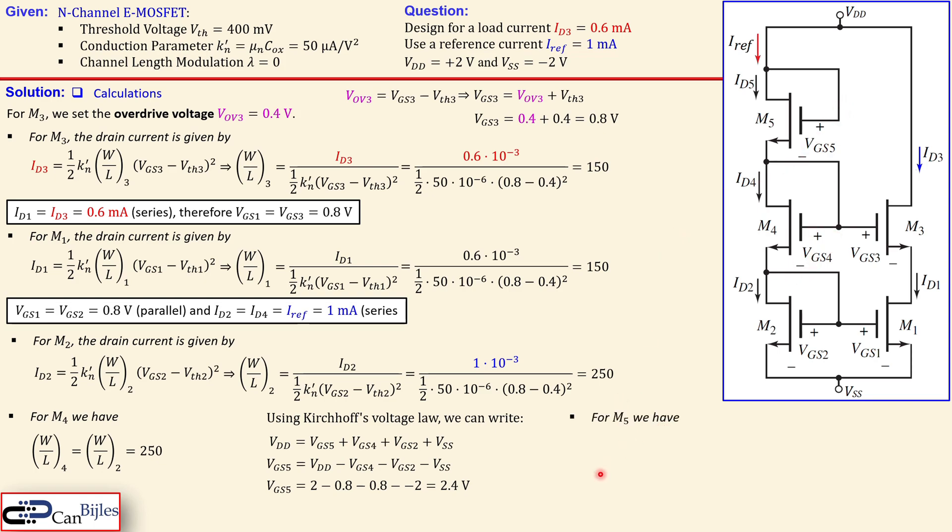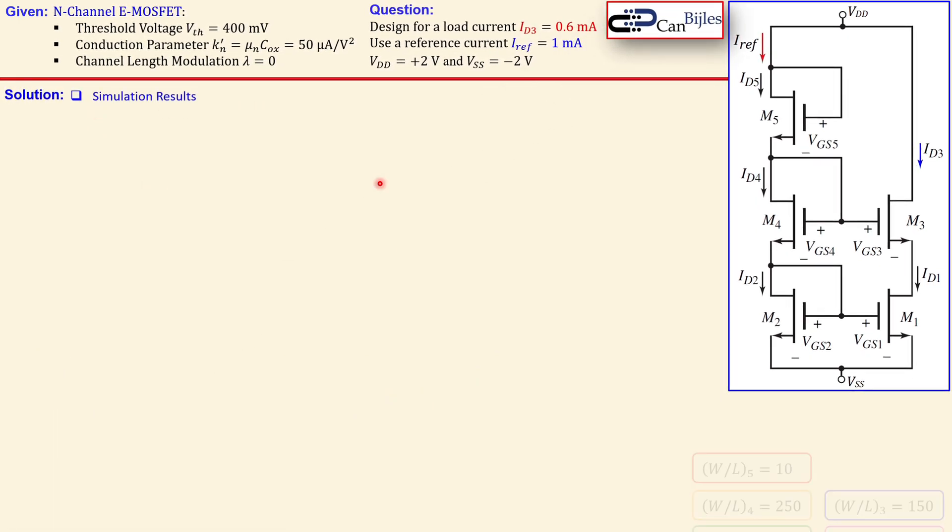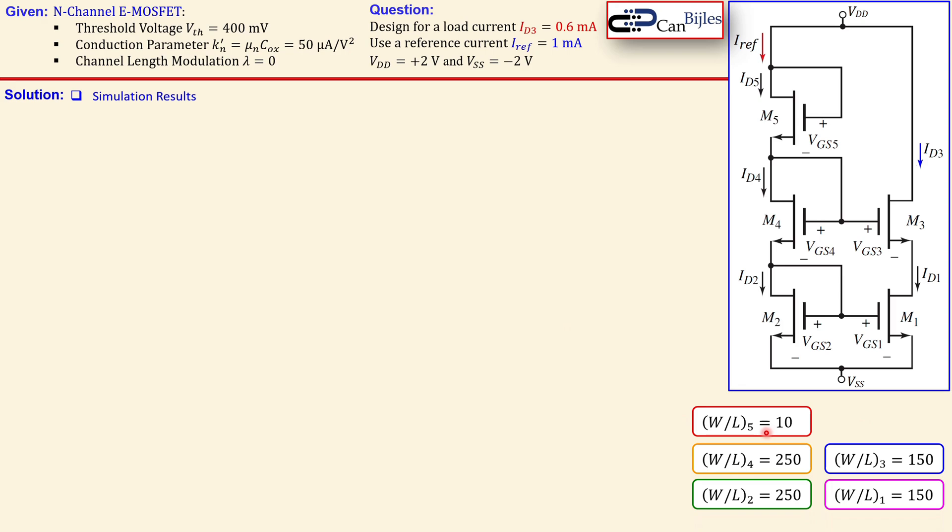Now we have the necessary information to determine the W over L for M5 which is then directly to the expression ID4 which is the reference current and we have the VGS5 and we can calculate now that this must be 10 exactly. So we have now in total five W over L's so the ratios so we can bring them together here now look at the simulation results so this is the summary of what we had M5, M4, M2, M3 and M1.